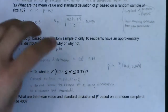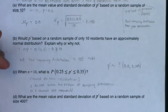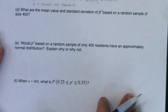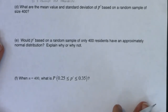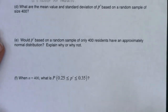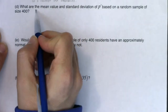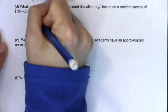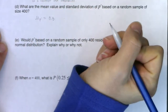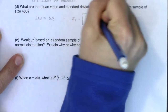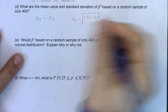We run into trouble when the sample size isn't large enough — 10 residents was just not large enough. Now we redo the problem with a much larger sample size: n = 400. With a bigger sample, variability decreases, and we hope to satisfy normality. The mean of the sampling distribution is still 30%, but the standard error changes: √(0.3 × 0.7 / 400).